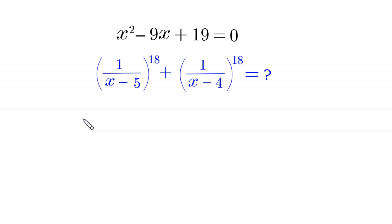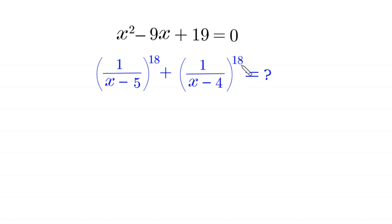Hello everyone, you are welcome. We need to solve this algebra equation: x squared minus 9x plus 19 equals 0, and our job is to find the value of the expression 1 over (x minus 5) to the power 18 plus 1 over (x minus 4) to the power 18.